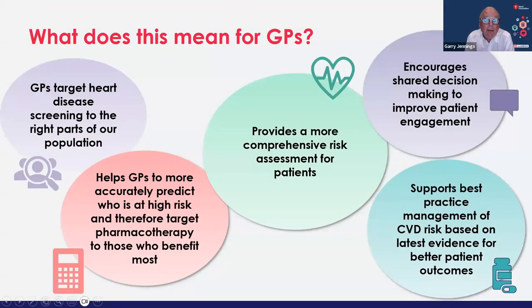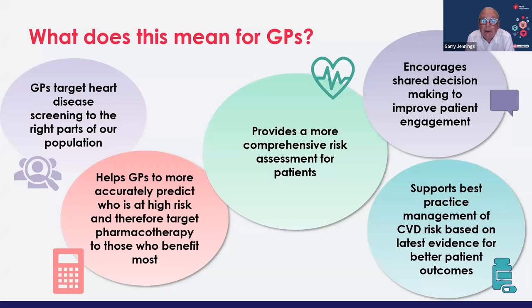So what does this mean for those in primary care? It means targeting your heart disease screening to the right parts of the population — those who benefit most from it — accurately predicting risk, and making sure that those who get pharmacotherapy are those likely to benefit the most. It enables a more comprehensive risk assessment and facilitates shared decision making to ensure patient engagement, often when trying to tell people with no symptoms that they might need lifetime management and even pharmacotherapy. It supports best practice management of cardiovascular risk.